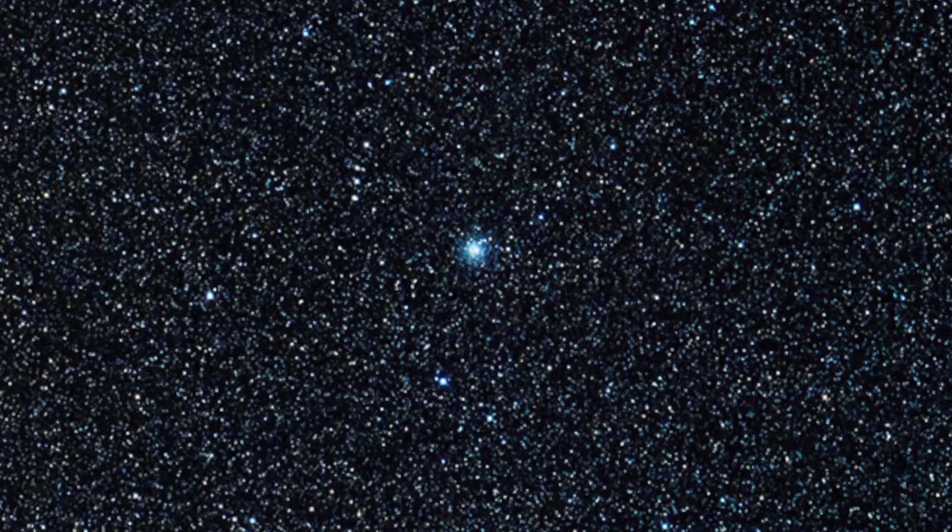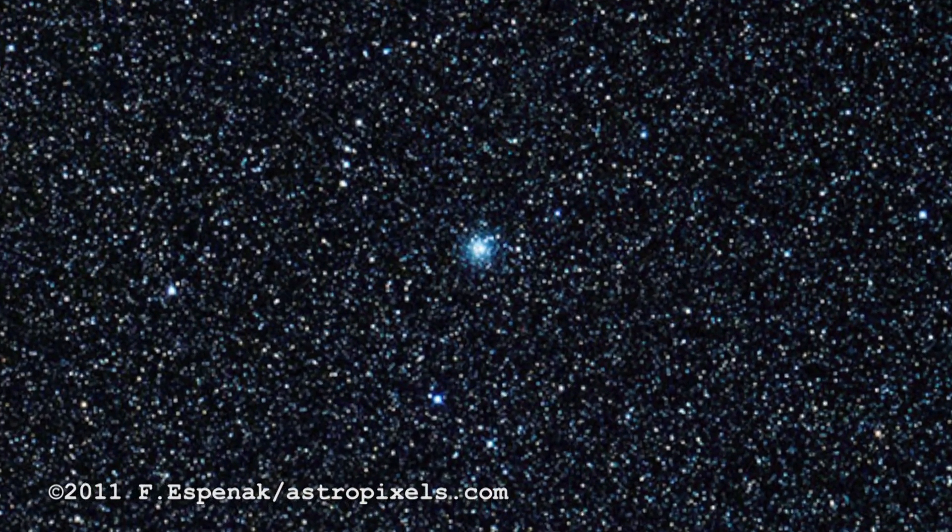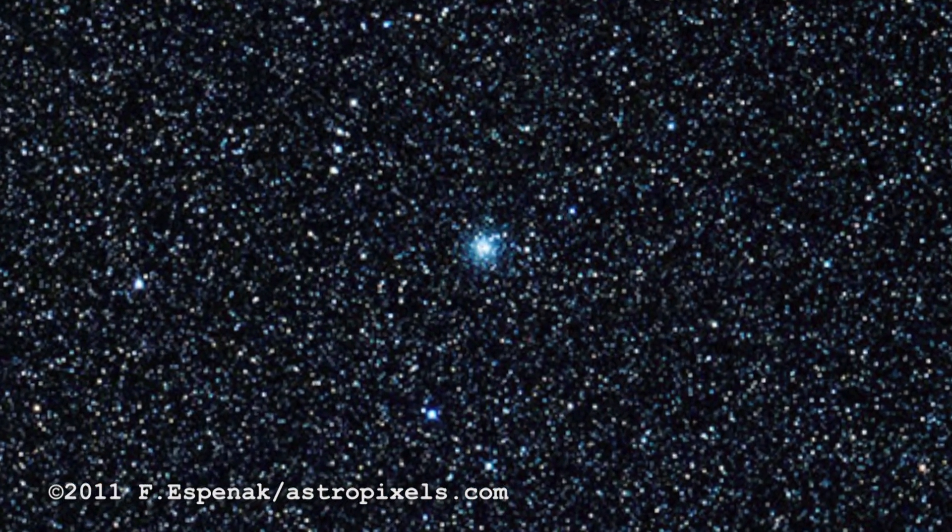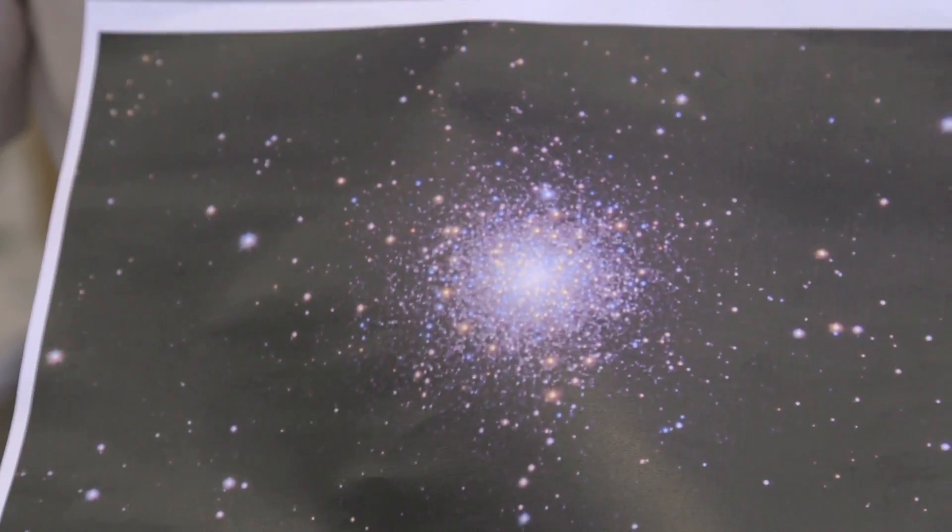All these ancient globular clusters have got ages of 12 billion years old. Essentially, you're looking at exclusively really low mass stars, stars which have got a mass just below that of the Sun. So there's different color stars because they're all in slightly different evolutionary stages.